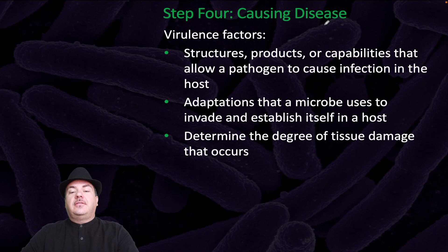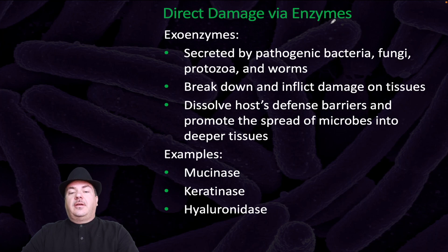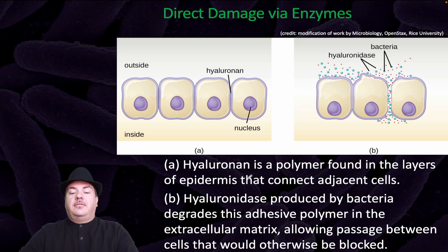Step four is causing disease. Virulence factors are structures, products, or capabilities that allow a pathogen to cause infection in the host — adaptations a microbe uses to invade and establish itself in a host — and they determine the degree of tissue damage that occurs. They can cause direct damage via enzymes. Exoenzymes are secreted by pathogenic bacteria, fungi, protozoa, and worms; they break down and inflict damage on tissues, dissolving host defense barriers and promoting the spread of microbes into deeper tissues. For example, hyaluronidase degrades the adhesive polymer hyaluronic acid in the extracellular matrix, allowing passage between cells that would otherwise be blocked.